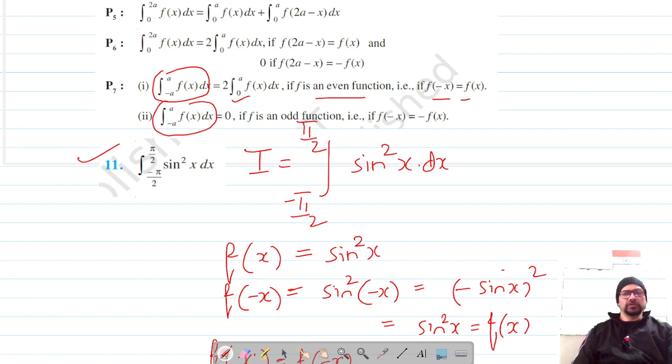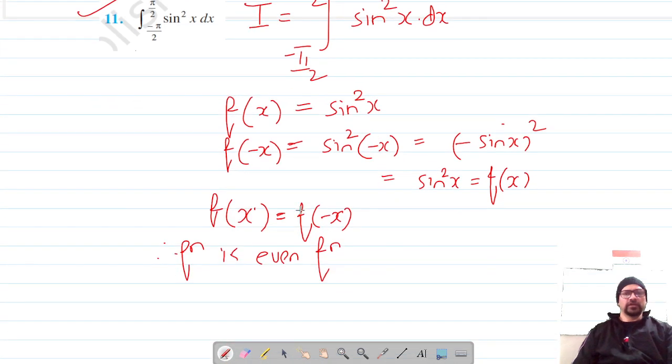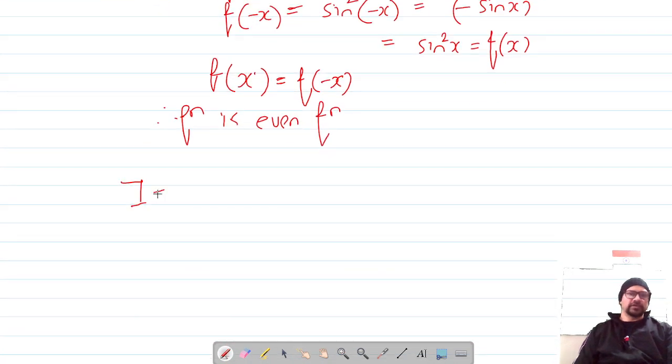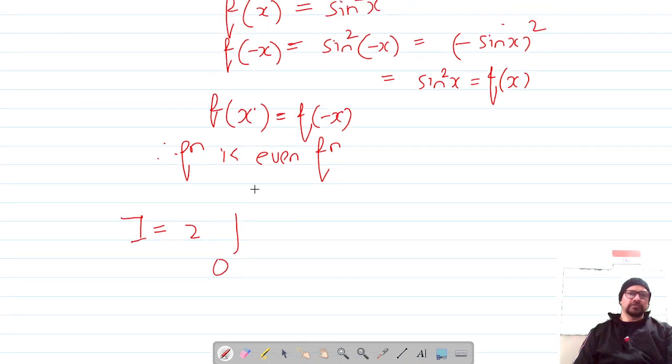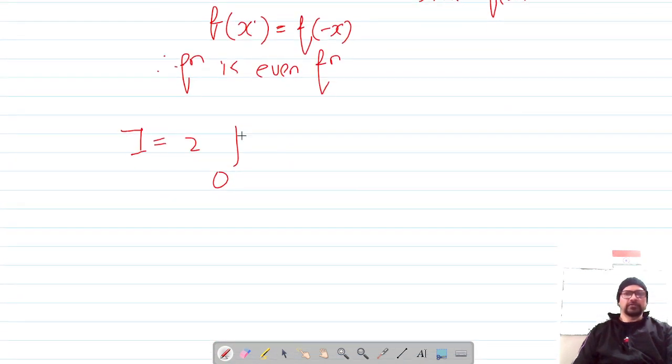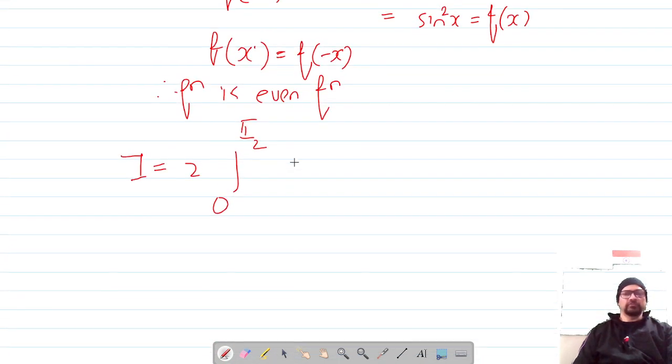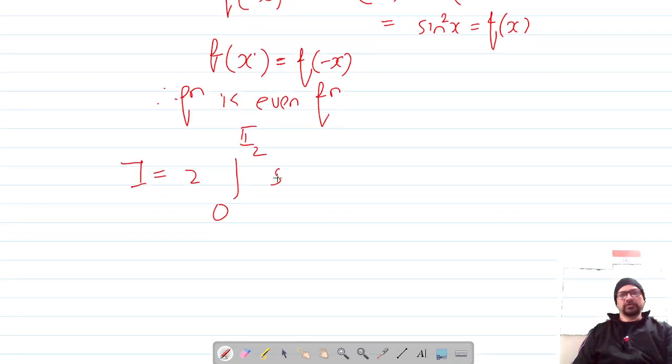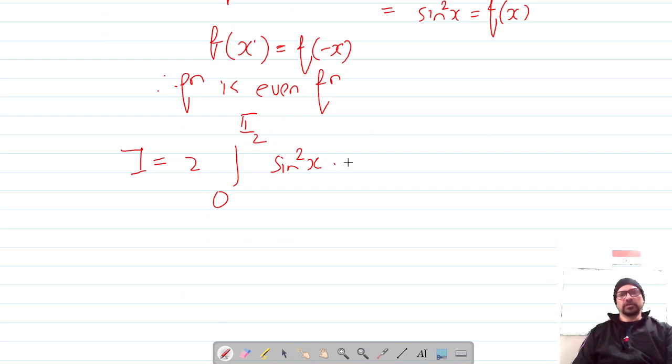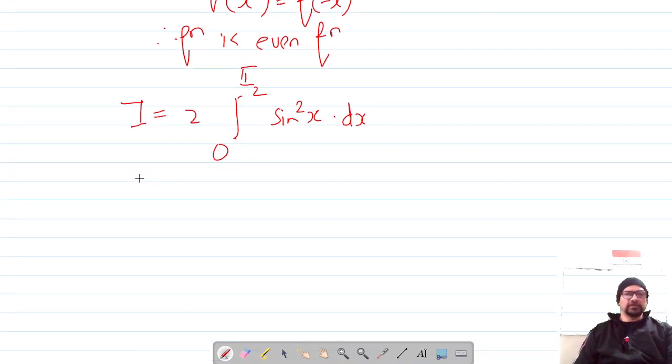Since the function is even, I can write it as 2 times the integral from 0 to a. So it's 2∫_0^{π/2} sin²x dx. Because one of the limits is 0, we can easily integrate this using the standard formula.